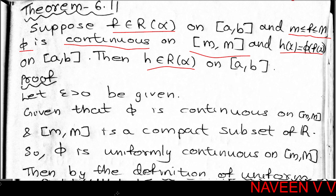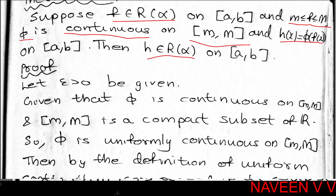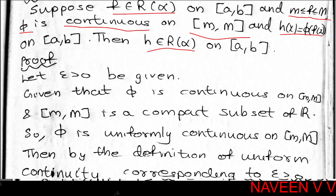To prove this, given a positive real number epsilon, we need to find a partition P of [a, b] such that U(P, f, α) minus L(P, f, α) is less than epsilon. Let epsilon greater than 0 be given.